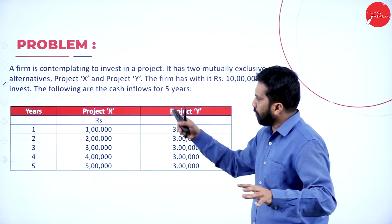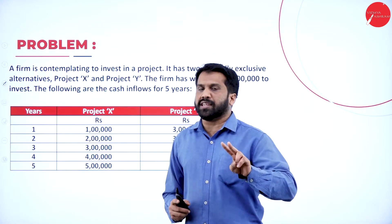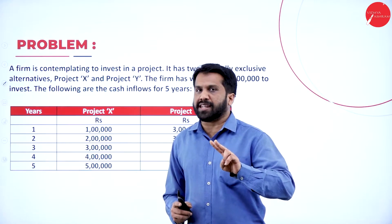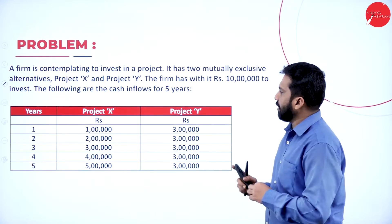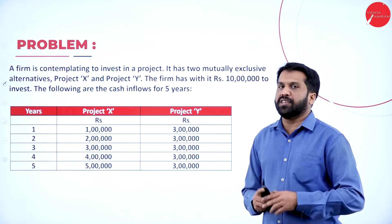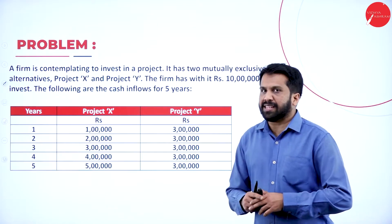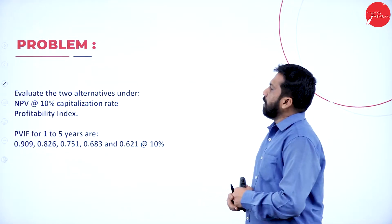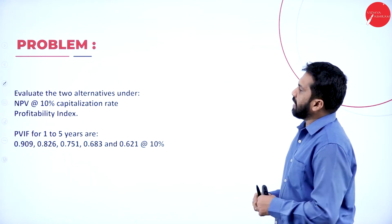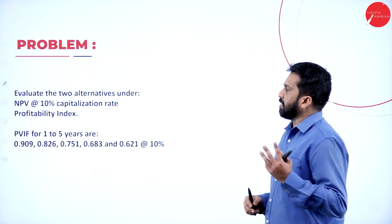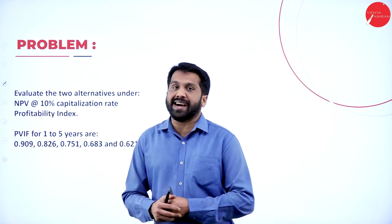There are two projects — one is project X and another one is project Y. So, out of X and Y, which one are we supposed to consider? We need to evaluate the two alternatives under NPV at 10% capitalization rate and we also have to find the PI, profitability index.